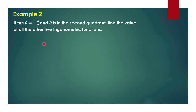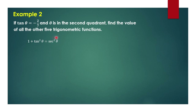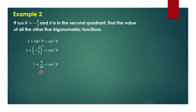For another example, let's say tangent theta is equal to negative 2 over 7, and the angle is in the second quadrant. We have to find the value of the other five trigonometric functions. We can use the Pythagorean identity to get secant of theta. By substitution, we have 1 plus the square of negative 2 over 7. So we have 1 plus 4 over 49, which gives us 53 over 49 as secant squared theta.